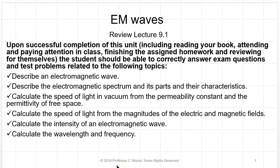Welcome to Lecture 21c, which is electromagnetic waves. We're going to be describing the electromagnetic wave and the spectrum, the speed of light in vacuum. We're going to calculate that from the permittivity constant and permittivity of free space, also from the magnitudes of electric and magnetic fields. We're going to talk about the intensity of electromagnetic waves and how to calculate that, and the wavelength and frequency.